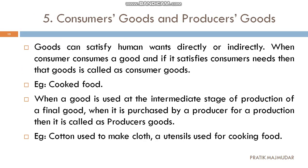Next are consumer goods and producer goods. Consumer goods are those where goods are used directly or indirectly for the satisfaction of human wants. For example, if you go to a hotel and purchase food and directly consume it to satisfy your hunger, that will be termed as consumer goods.